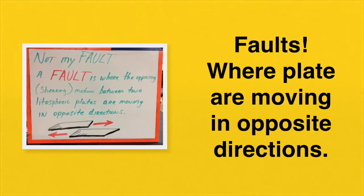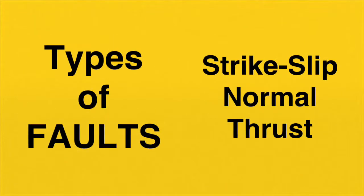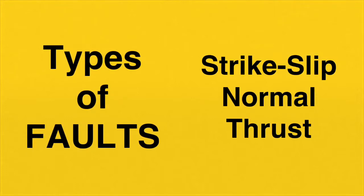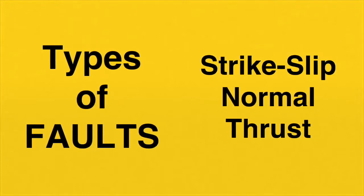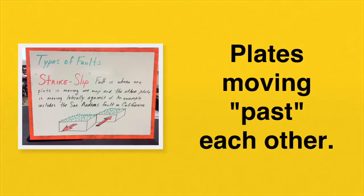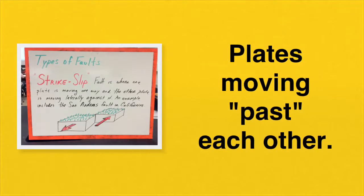And we have learned that faults are the places where the plates are moving in opposite directions. There are a few different types of faults. The three primary fault types are strike-slip, normal, and thrust. Plates that are moving past each other, so one going one way and one going the other, are known as a strike-slip fault.